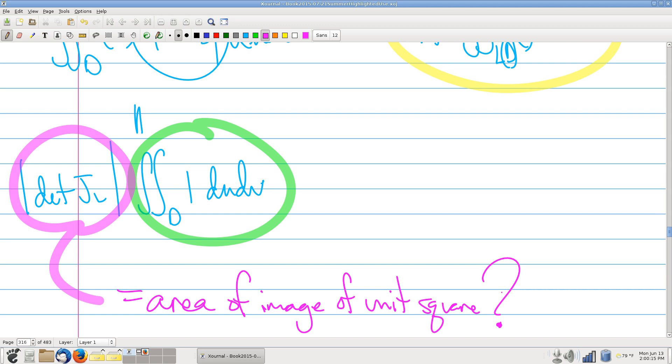We're supposed to come to that conclusion, but at the moment we're just not clear why. Well, let's write down. How would I compute the area of the image of the unit square? Okay. And just see what happens.